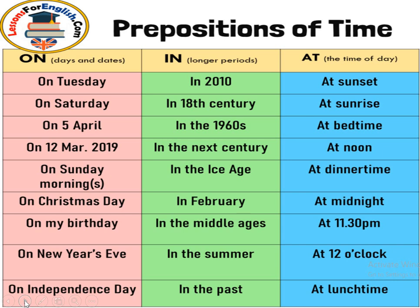Speaking of time again: 'on' is used for days and dates — like on Tuesday, on 5th of April, on Christmas day, on New Year's Eve, on Independence Day. For a longer period of time, we use 'in' — as in in 2010, in the next century, in the ice age, in the middle ages, in summer, in the past. And 'at' is used at a particular time of day — at sunset, at sunrise, at bedtime, at midnight, at lunchtime. So this is another way of looking at the three very confusing prepositions: on, in, and at.